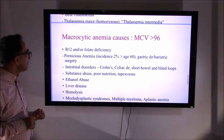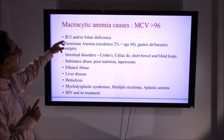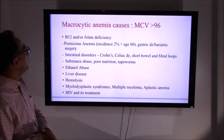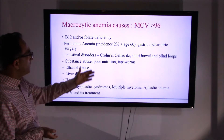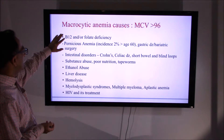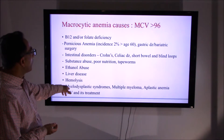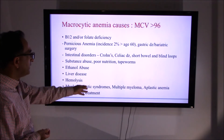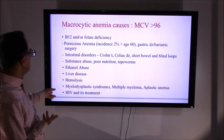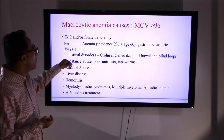Macrocytic anemia involves larger than normal red blood cells. Common causes you will see in medical records include B12 or folate deficiency, gastric disease, celiac disease, and Crohn's disease. If those are not present, consider alcohol use or liver disease. Bone marrow malfunction can lead to myelodysplastic syndromes, and malignancies such as multiple myeloma, aplastic anemia, HIV infection, and related treatments can also cause macrocytic anemia.